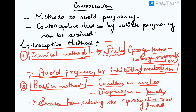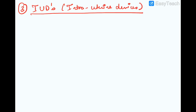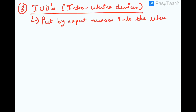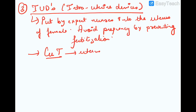The third contraceptive method is IUDs — intra-uterine devices. These are inserted into the uterus of the female by expert nurses and they avoid pregnancy by preventing fertilization. An example is the copper-T, which when placed inside the uterus releases copper ions that kill the sperm.